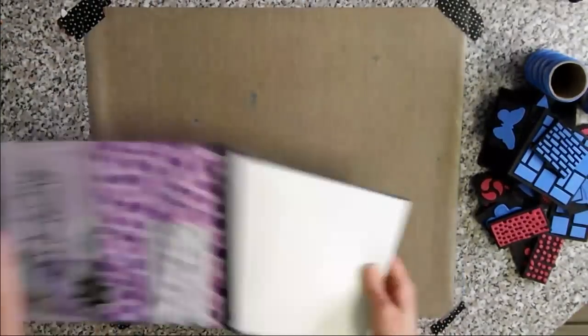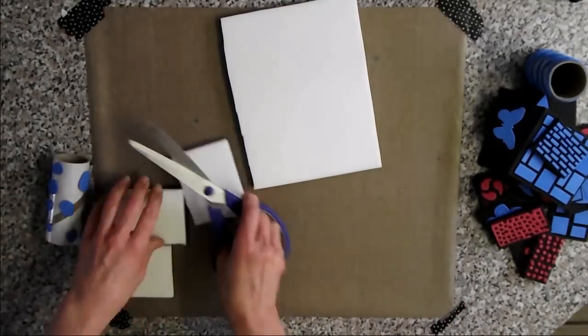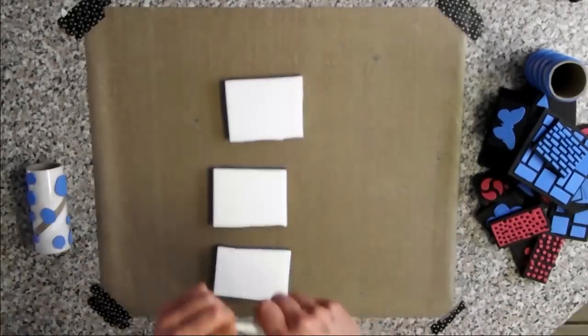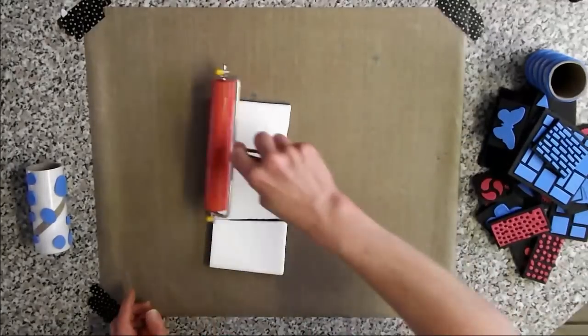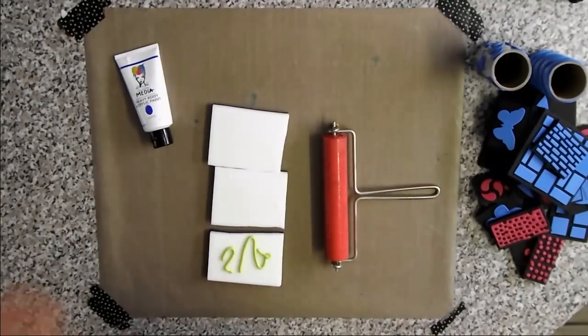Use Ranger Cut and Dry Foam to create stamp pads for the roller stamps. Spread acrylic paint extender on the Cut and Dry Foam to slow down the drying time of the paint. Now add your acrylic paint.